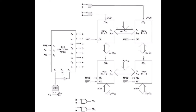For the enable inputs, address lines A19 to A14 are all ones, so they are directly connected to a NAND gate and the output is fed to the decoder's enable pin. Where the enable has an active-low bar, only 0 is needed, and where there is no bar we need 1, so a NOT gate is used to get a 1 from the NAND output.